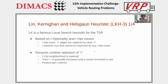One of the main problems with R-opt moves is that they scale exponentially with the size of R. If the neighborhood of 2-opt moves is quadratic in the size of the instance, a 3-opt moves neighborhood is cubic, and so on.